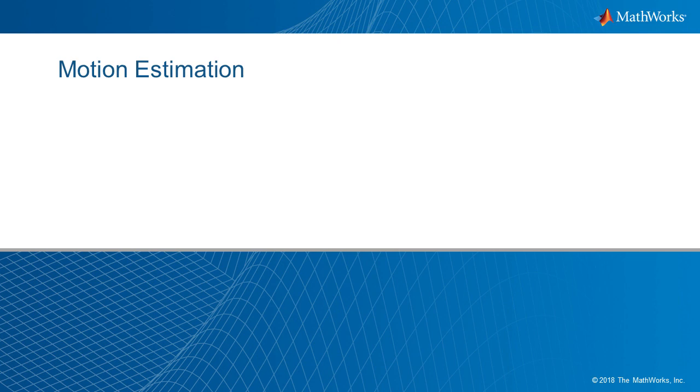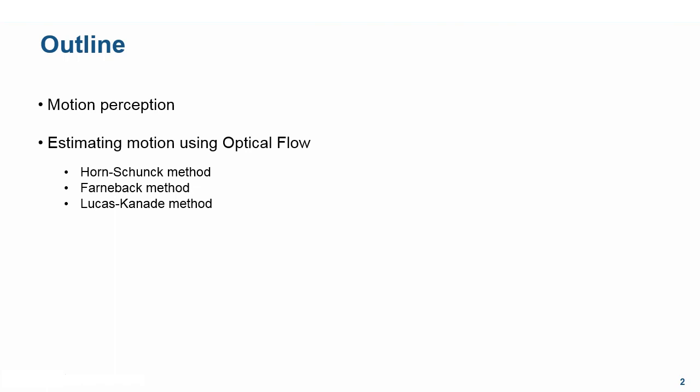In this video, we are going to learn how to estimate motion between video frames. Specifically, we will talk about how we perceive motion and how to estimate motion using a technique called optical flow. There are three algorithms we can use to implement optical flow using the computer vision system toolbox: namely the Horn-Schunck method, the Farneback method, and the Lucas-Kanade method.